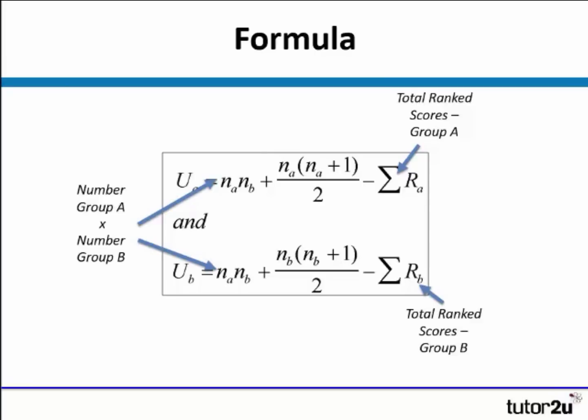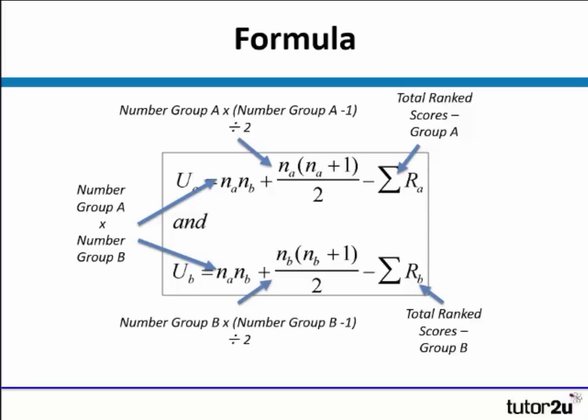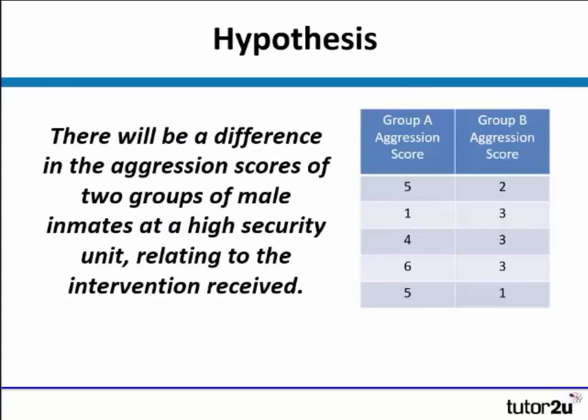The next part is where we have to look at the number in group A, multiply that by itself plus one, and then divide it by two. And then for the second part of Mann-Whitney U, we have to do that for group B. In this short introductory video, we're going to be testing the hypothesis: there will be a difference in the aggression scores of two groups of male inmates at a high security unit relating to the intervention received.